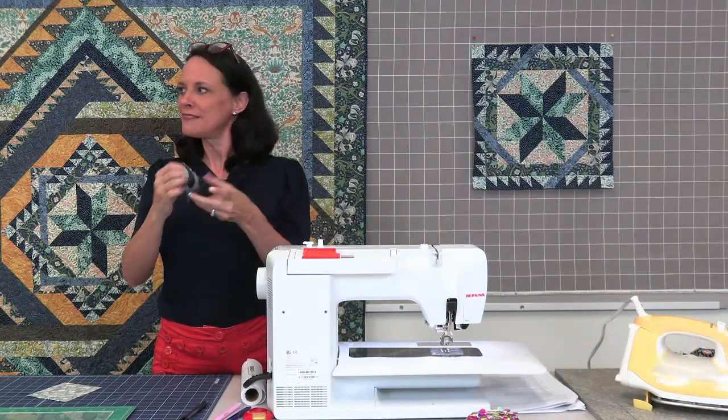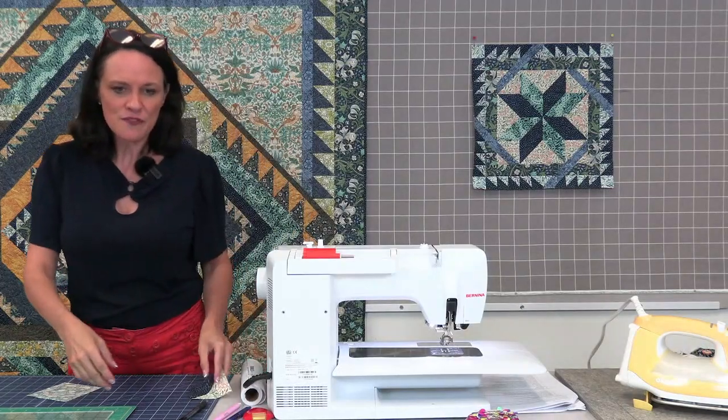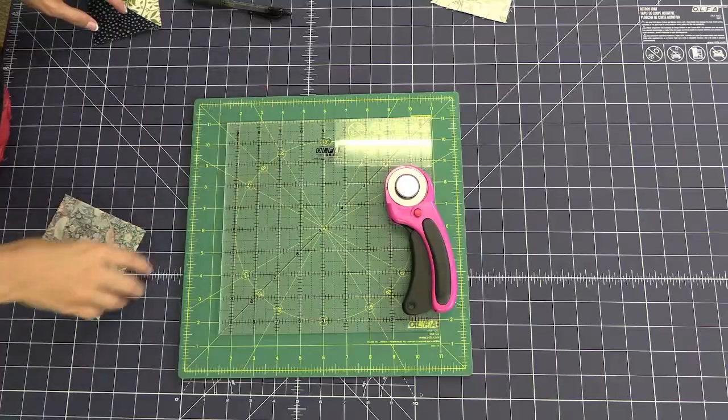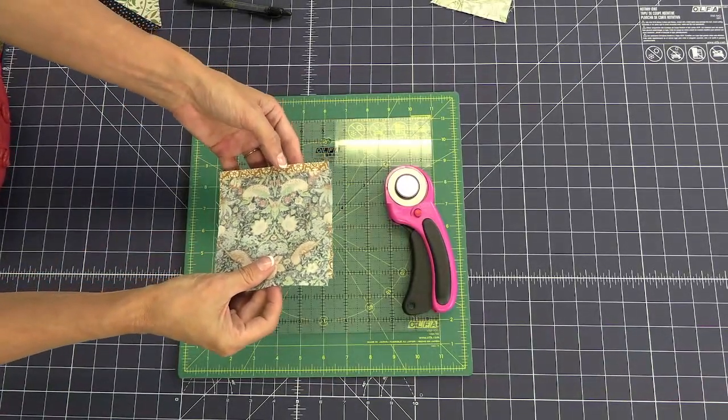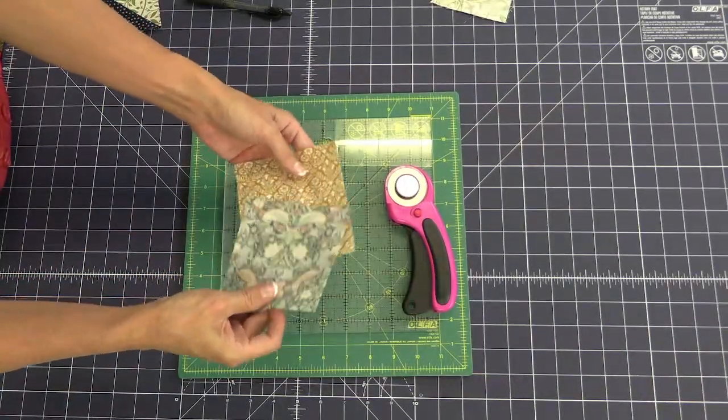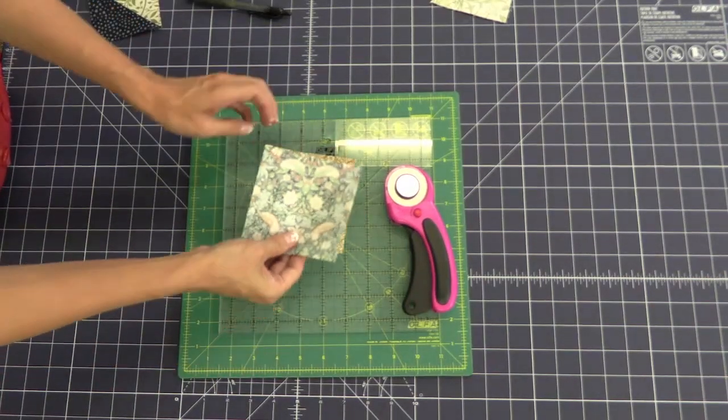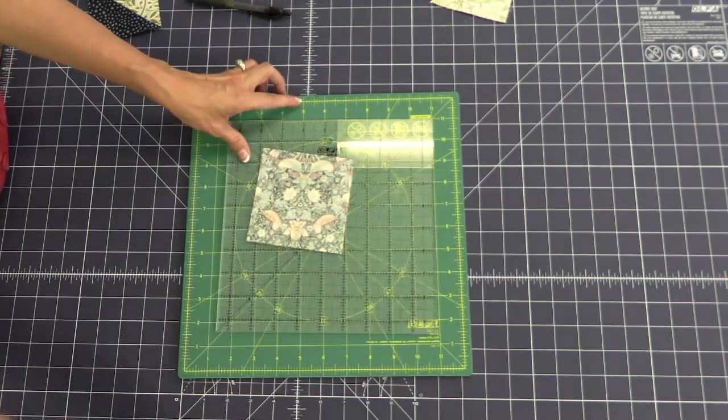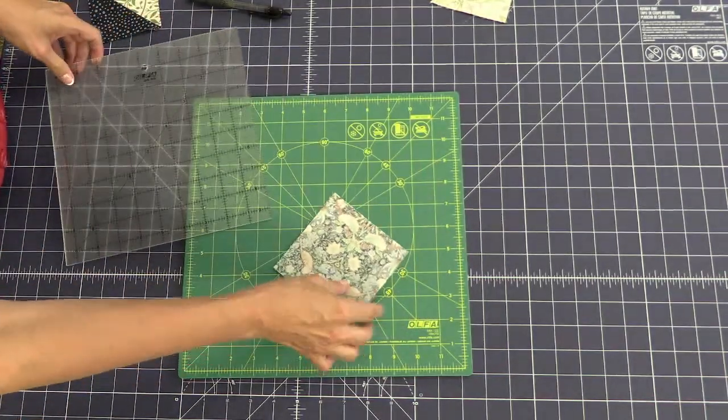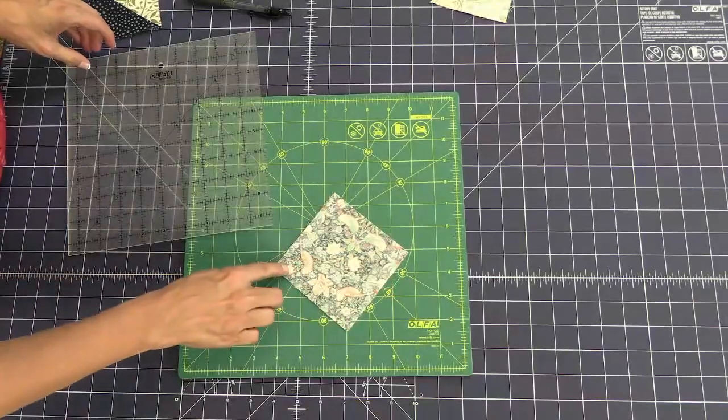Are we ready to start? Okay, so first of all, what we're going to do is cut our fabric just like the pattern says. Two pieces, two squares. We're going to put these right sides together. And first of all, we're just going to mark a line from corner to corner.